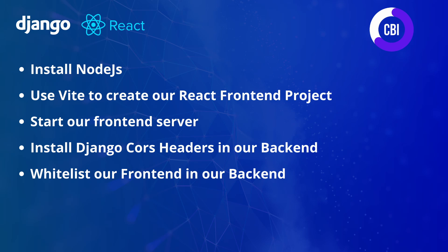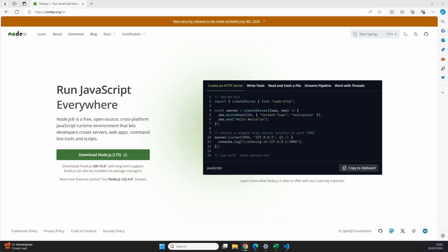To realize this we're going to be following five steps. We're going to start by installing Node.js, which is going to help us with handling JavaScript on our computer. Next we're going to use a package called Vite to create a React frontend project, and Vite is going to take care of all of the configuration and setup for us. Then we're going to start our frontend server and see if everything works. We also need to make sure that our frontend can communicate with our backend, so we're going to install a package called django-cors-headers and whitelist our frontend URL in our backend settings.